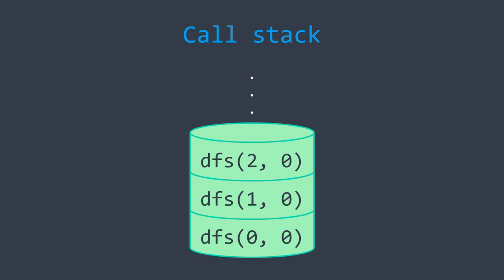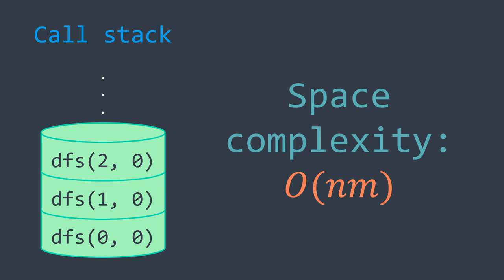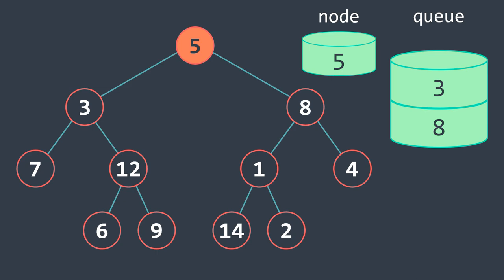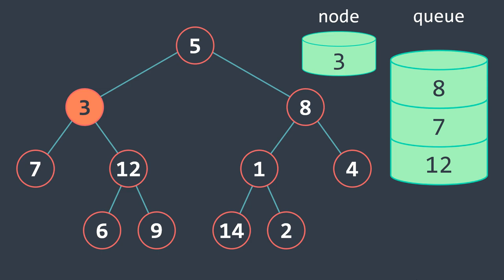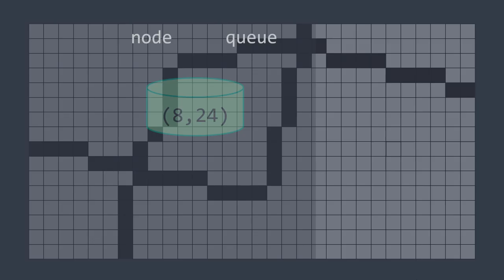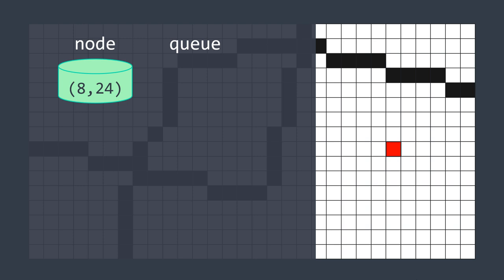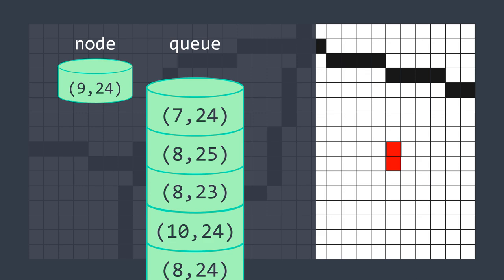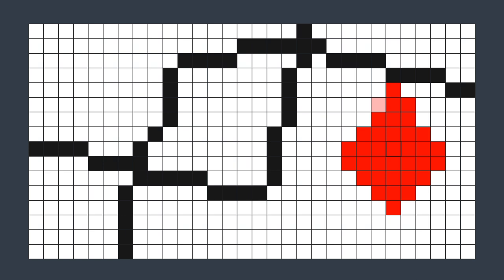Now let's move to the BFS approach. When applying BFS to a tree, we read the root and put its children in the queue, then dequeue the next node, read it, and enqueue its children — and so on until the queue becomes empty. In our case, we color the initial cell and enqueue its 4 directional connected cells. Then we dequeue a cell from the queue, color it, and enqueue its 4 directional connected cells — and so on until the queue is empty. The area gets filled level by level: first the initial cell, then the ones 1 cell away, then 2 cells away, and so on.